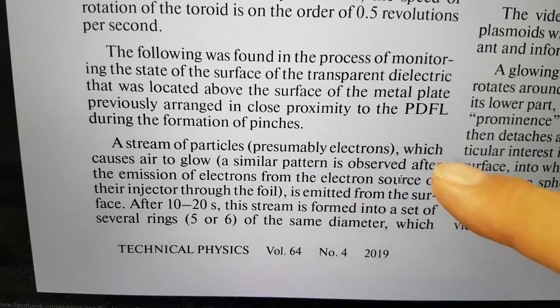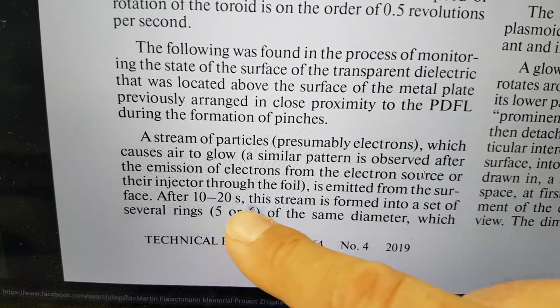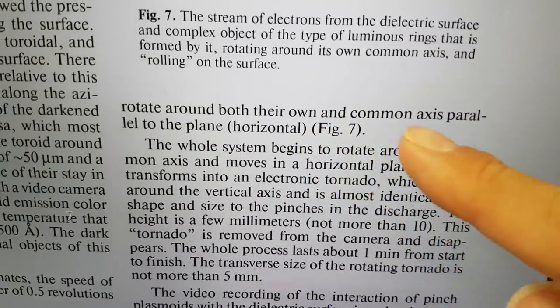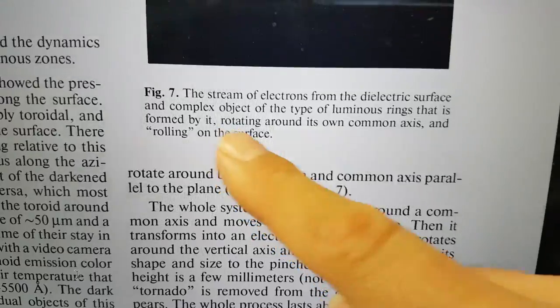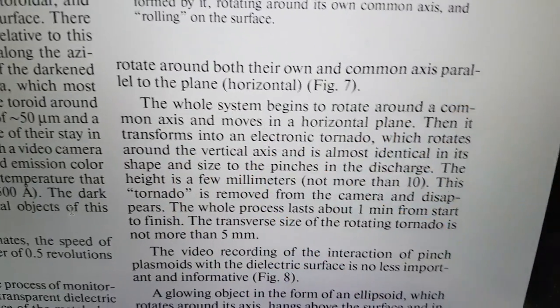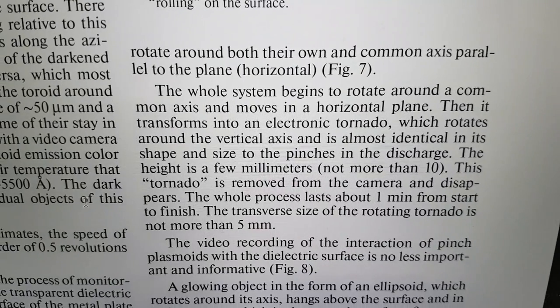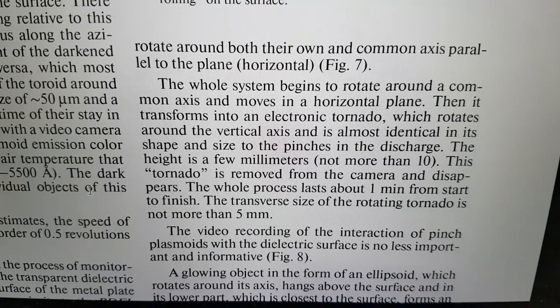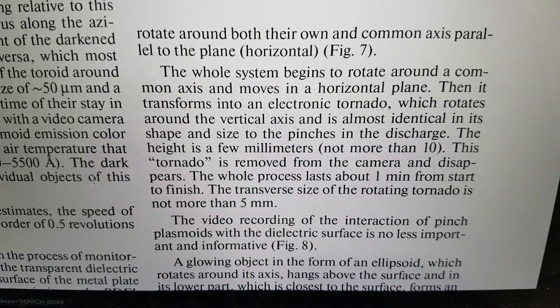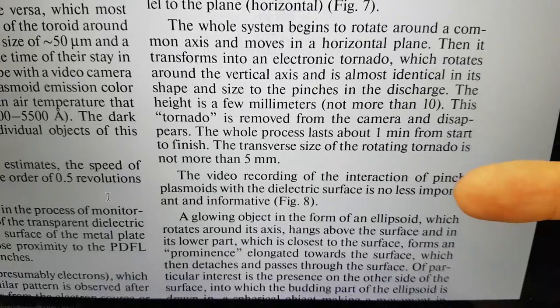Let's read a bit more here. A stream of particles, presumably electrons, which causes air to glow, is emitted from the surface. After 10 to 20 seconds, this stream is formed into a set of several rings, five or six, of the same diameter, which rotate around both their own and common axis parallel to the plane horizontal. Again, it's saying it rolls across the surface. The whole system begins to rotate around a common axis and moves in a horizontal plane. Then it transforms into an electronic tornado, which rotates around the vertical axis and is almost identical in its shape and size to the pinches in the discharge. The height is a few millimeters, not more than 10. This tornado is removed from the camera and disappears. The whole process lasts about one minute from start to finish. The transverse size of the rotating tornado is not more than five millimeters. They have video recordings of these things. I really want to see these video recordings.